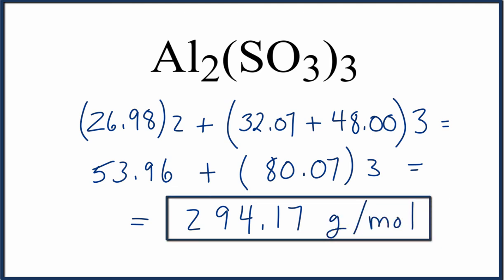You might get a slightly different answer if you use a different periodic table that rounds to a different number of decimal points, but this is the molar mass or molecular weight for aluminum sulfite, Al₂(SO₃)₃. This is Dr. B, and thanks for watching.